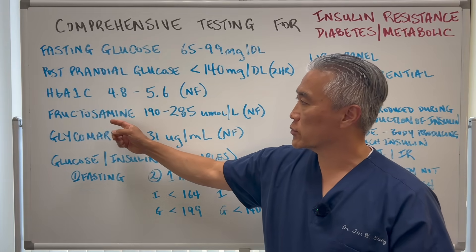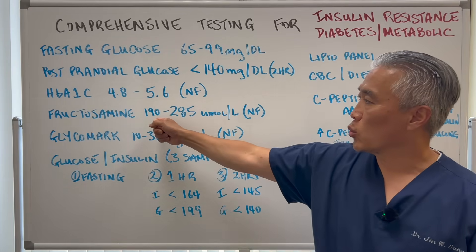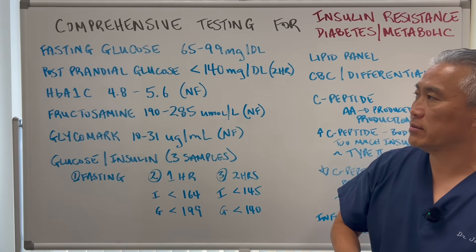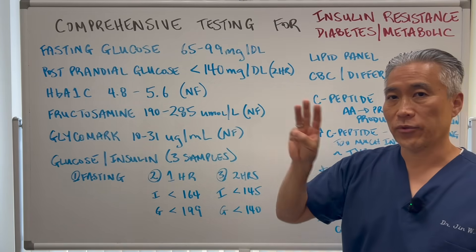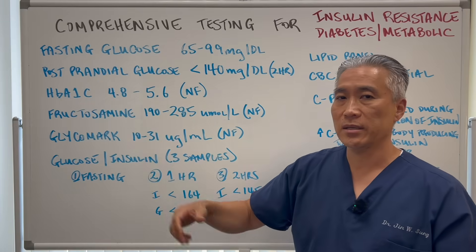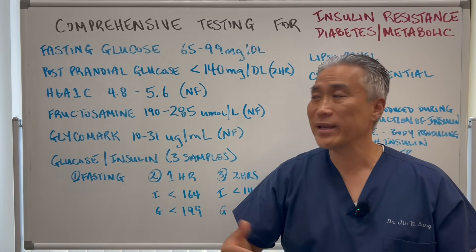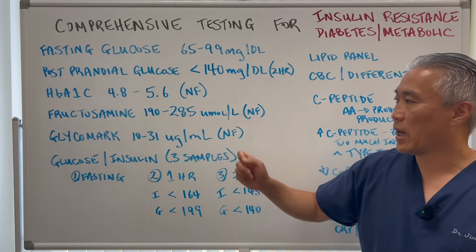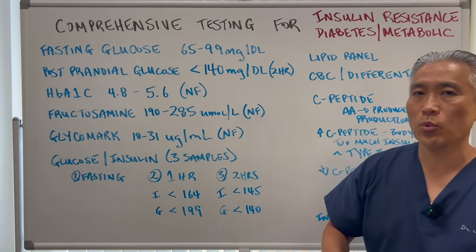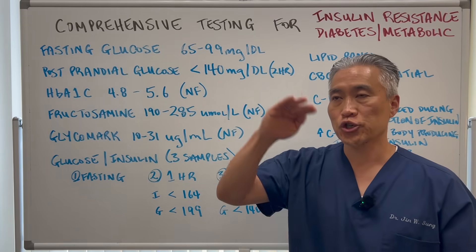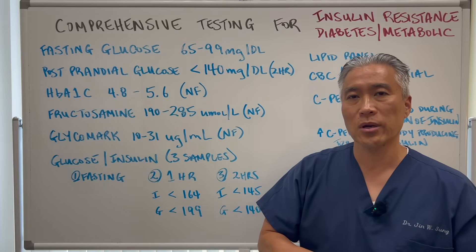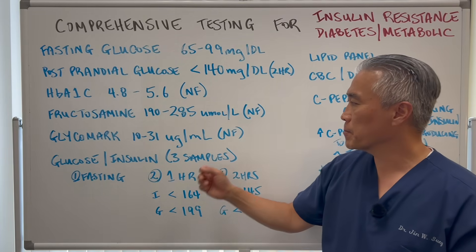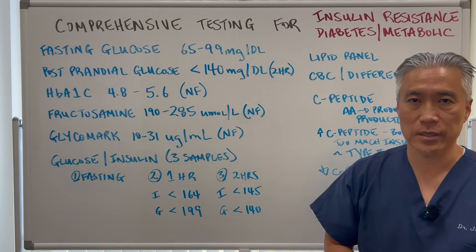There's another marker called fructosamine, with a reference range of 190 to 285. You can do this non-fasting. Hemoglobin A1c is a three-month average, but fructosamine is more a one to three-week average of blood sugar. Glycomark can also be done non-fasting and looks more at sugar spikes, so if you want to make sure you're not having wild fluctuations of sugar and insulin throughout the day, glycomark can be a good test for that.